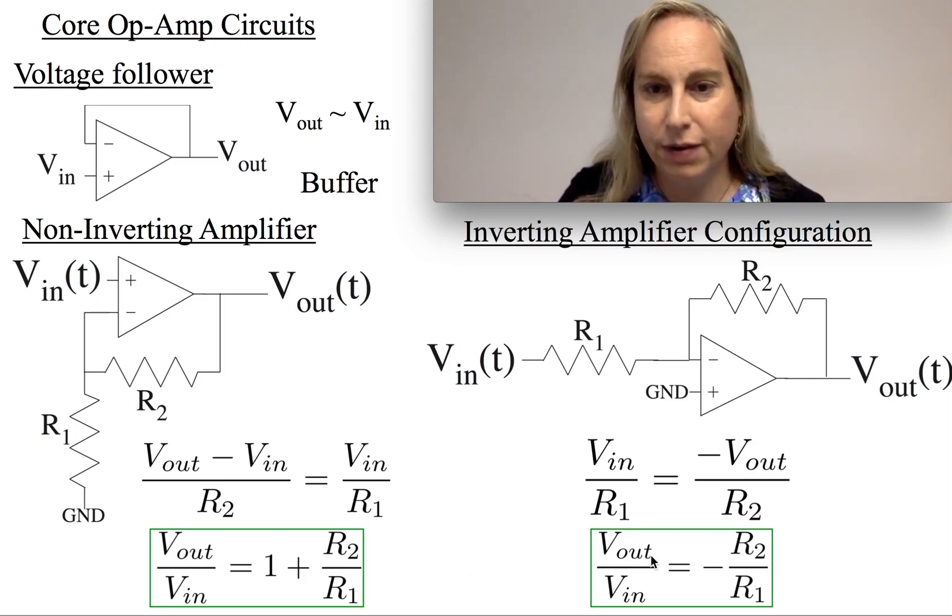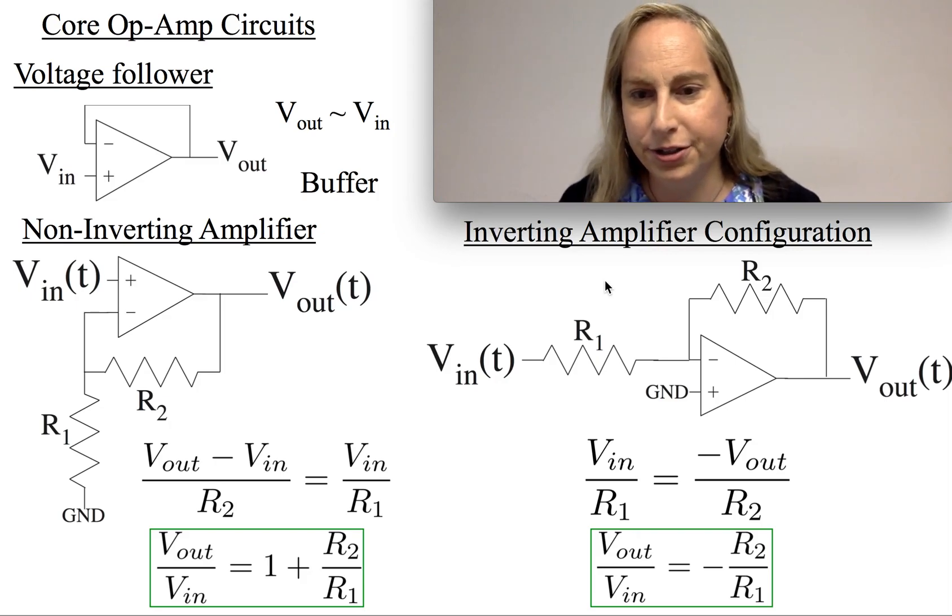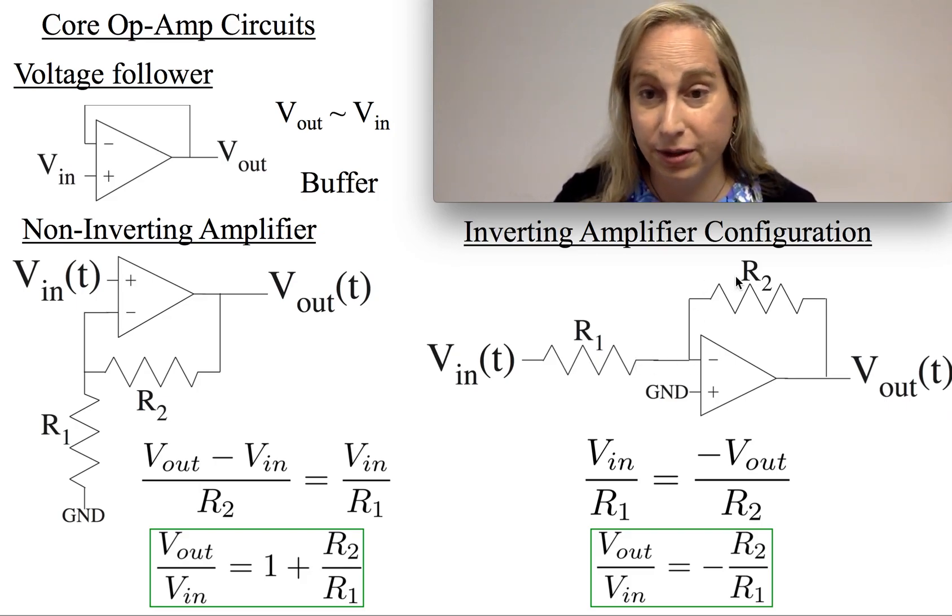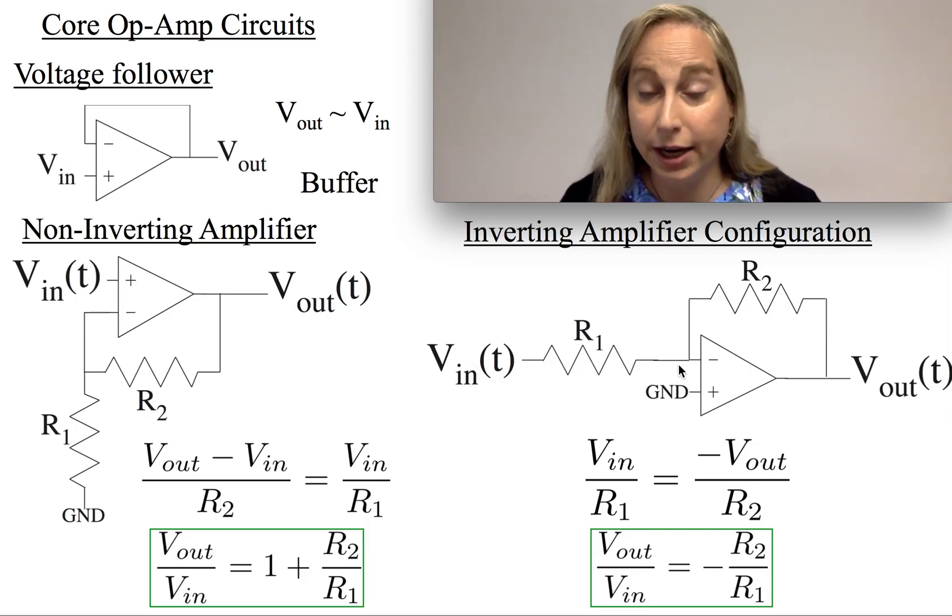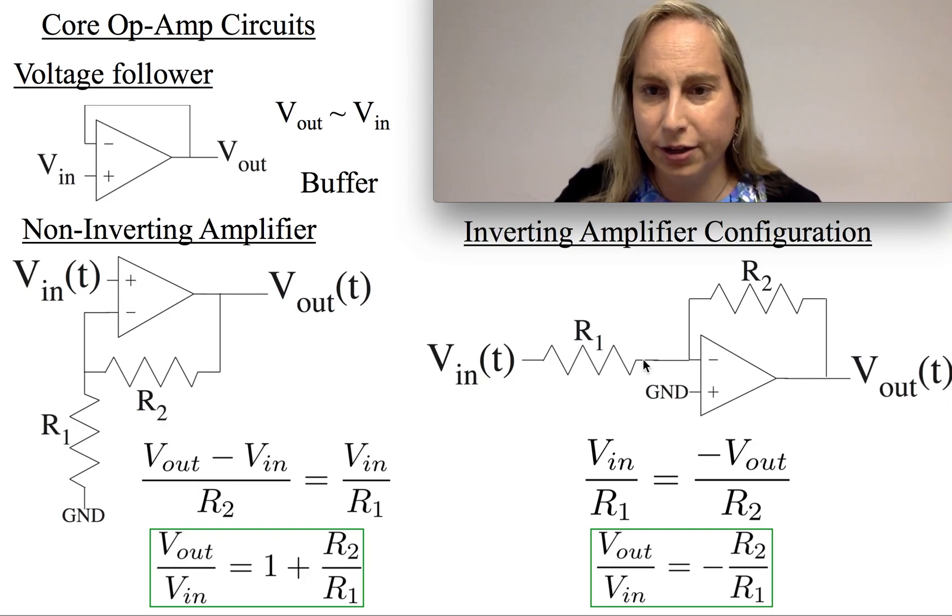There is a flip side of this, what's called an inverting configuration, which basically takes the input voltage and now directly picks a resistor into the minus terminal and then something in the feedback. You could imagine this voltage to this minus terminal here is setting a current, and that current then goes through the second resistor.